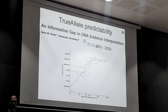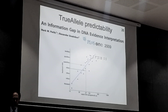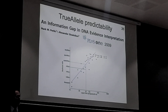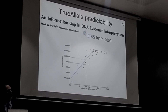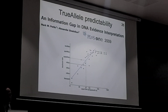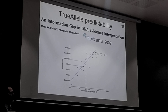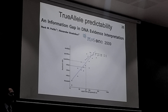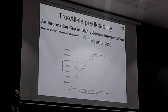In the journal PLOS ONE, which is an open access journal, we published on an information gap in DNA evidence interpretation in 2009. The data came from the federal government. We interpreted it with computers and with people in different ways and made a comparison. This figure shows a very important concept in science and law: there is a straight-line, linear relationship that lets you predict how much information you're going to get out of a DNA sample.